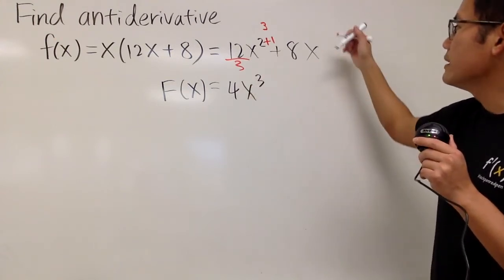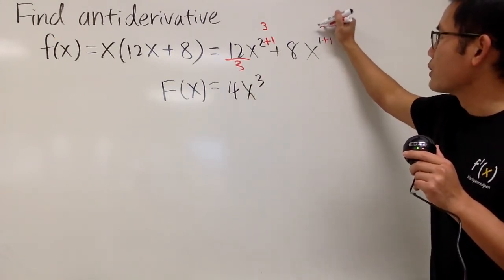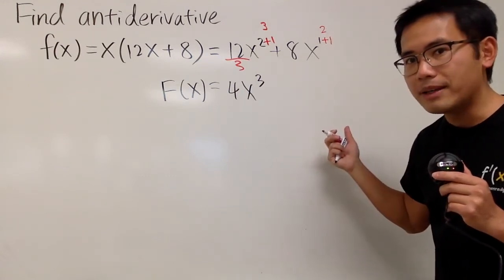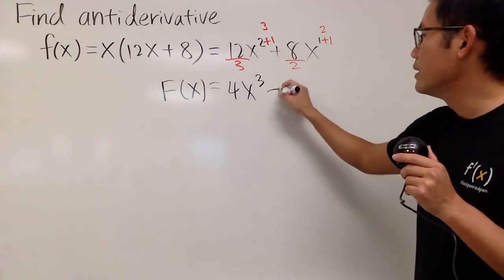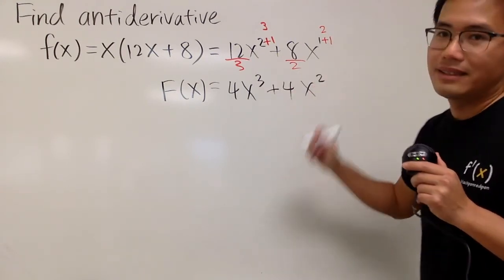And then, for this one, this is x to the first power, so I'm going to add 1, and of course, that's 2, and we have to divide it by the new power. So, divided by 2 right here, so 8 divided by 2. Again, we get 4, and then this is x squared, like this.